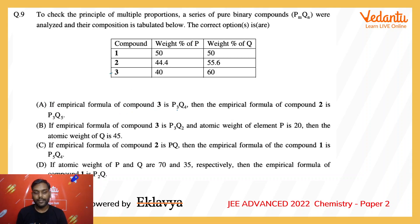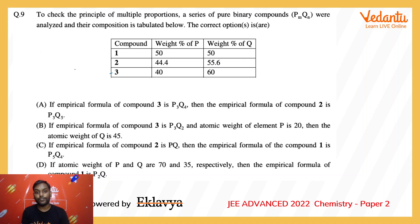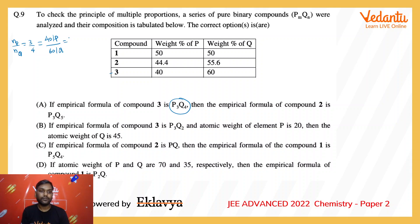Option A: if the empirical formula of compound 3 is P₃Q₄, then the empirical formula of compound 2 is P₃Q₅. For compound 3, the weight ratio of P is 40 and Q is 60. Finding the mole ratio — number of moles of P upon Q equals 3/4, which equals (40/atomic weight of P) divided by (60/atomic weight of Q), giving us (2/3) × (Q/P).